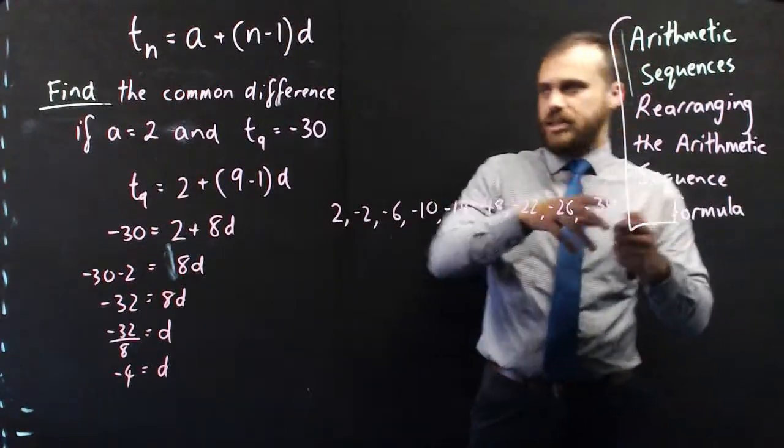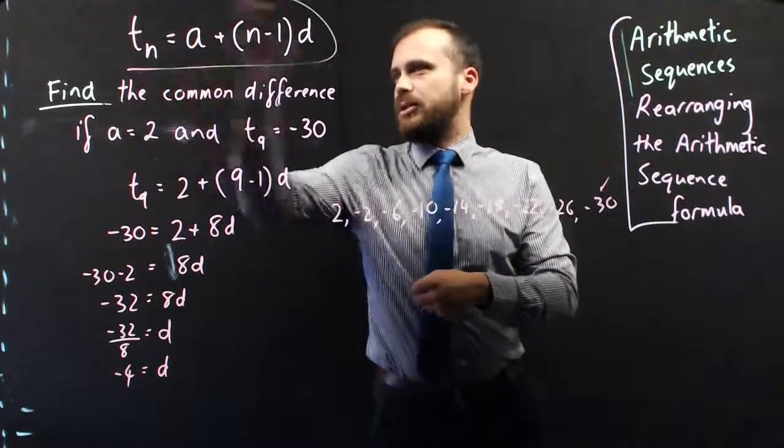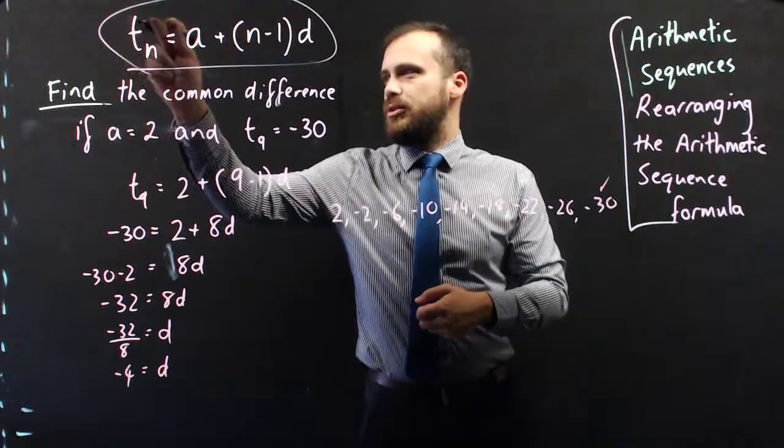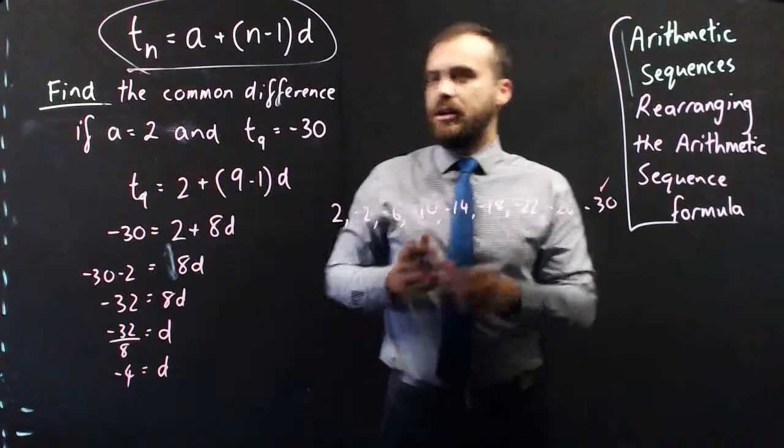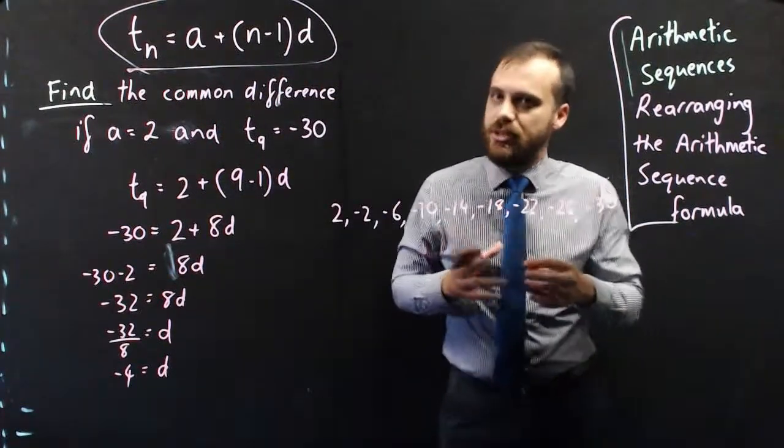So arithmetic sequences, as long as you know the formula and you know three of the variables, you can find the fourth. As long as you know three of the things, you can find the other one.